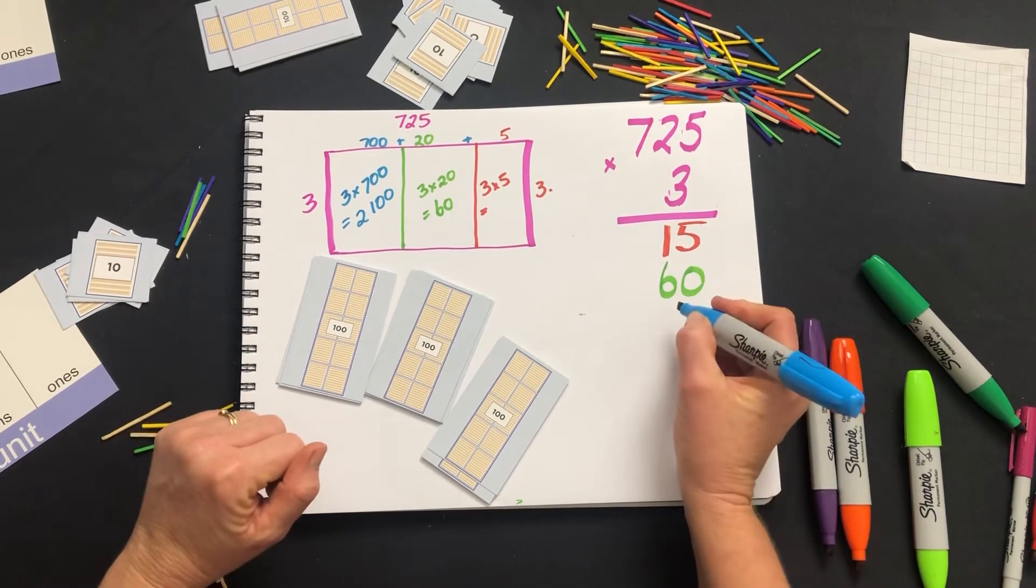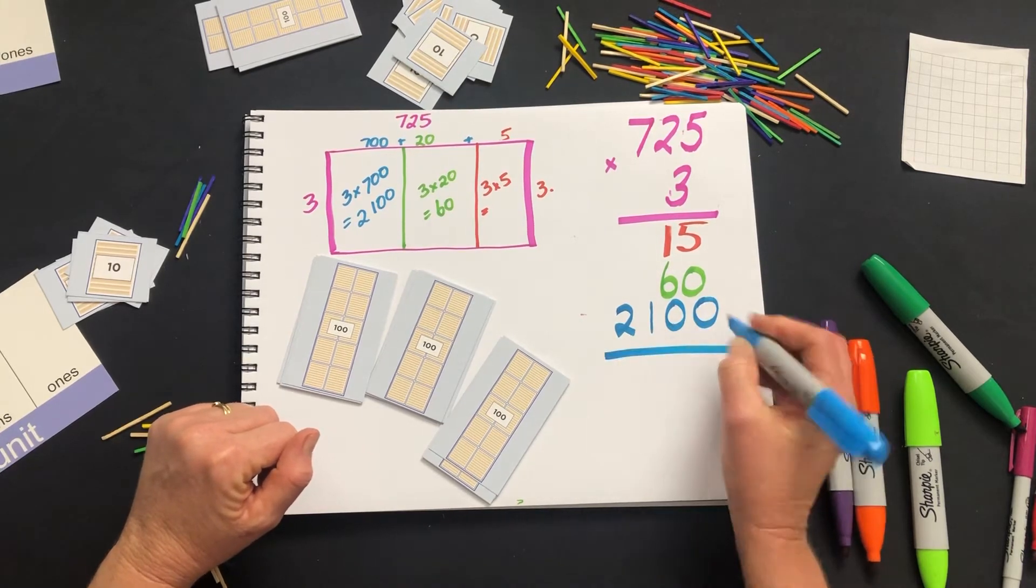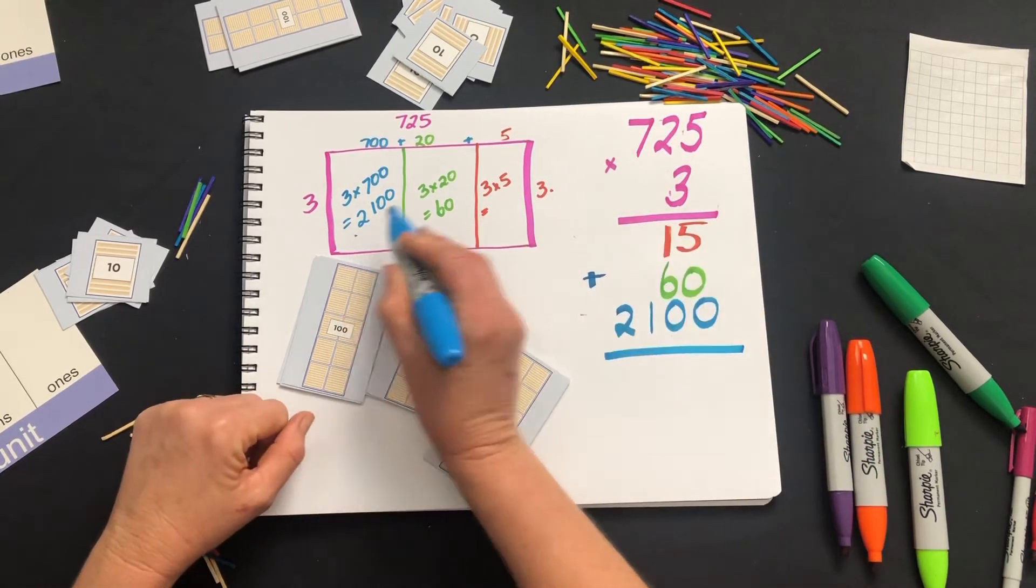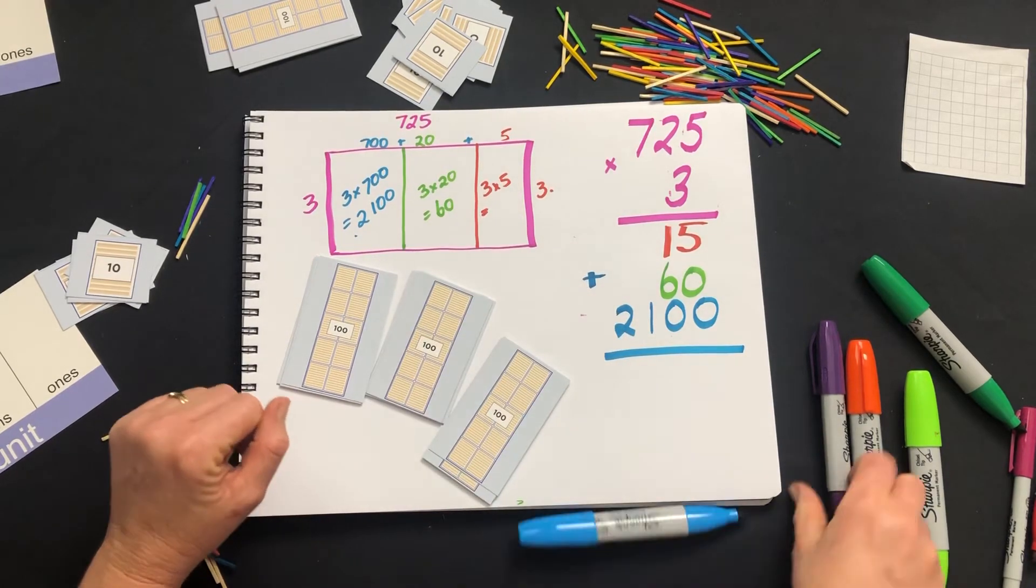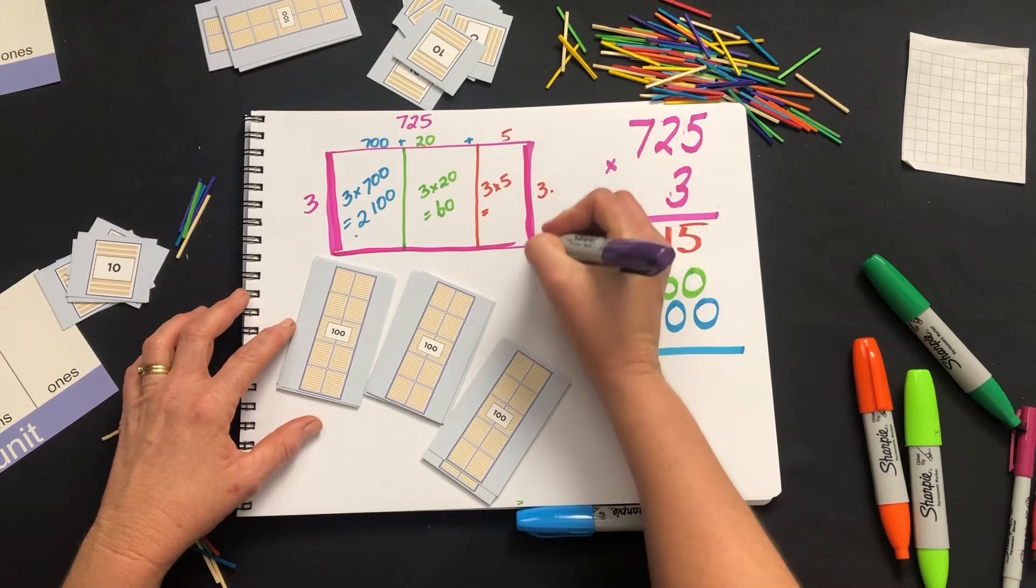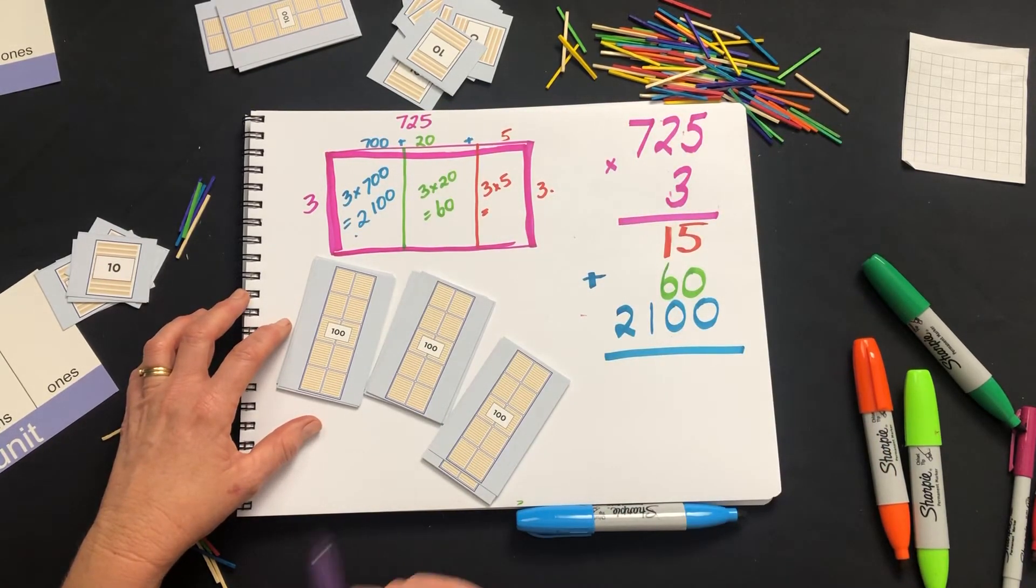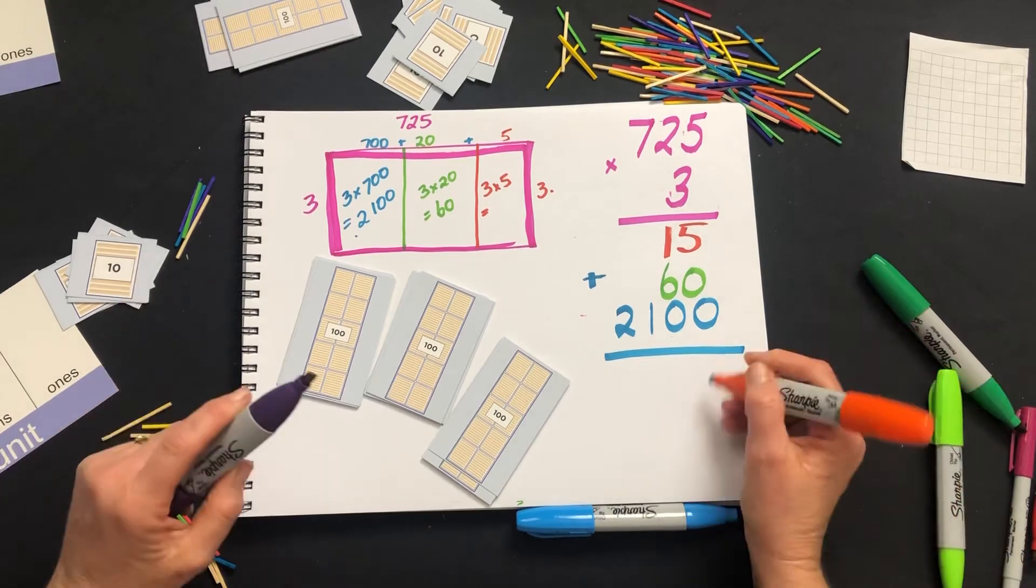So we write that down, and we can see that we are adding our three rectangles to give us our large rectangle, which is our problem: 725 times 3. So we add the rectangles together.